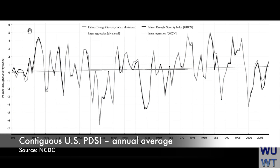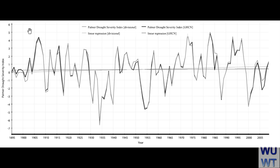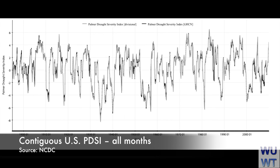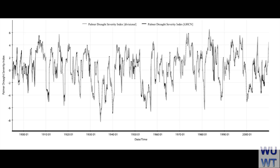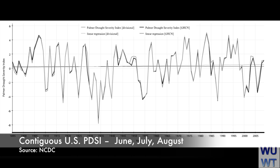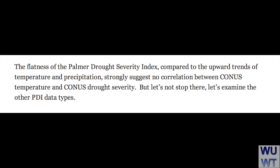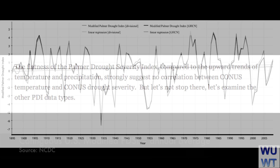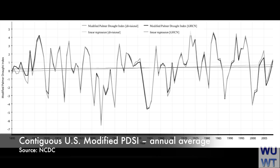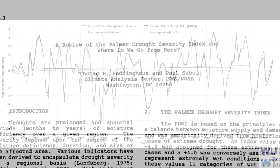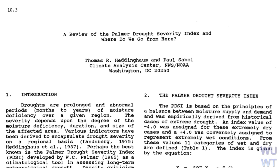Here are the plots. Note that for the Palmer Index, negative values correlate to drier conditions and positive values show wetter conditions. And just in case some people might argue that summer months are most affected, check out this graph. The flatness of the Palmer Drought Severity Index compared to the upward trends of temperature and precipitation strongly suggests there is no correlation between CONUS temperature and CONUS drought severity. Let's examine other PDI data types. Here's the modified Palmer Drought Severity Index, the operational version of the PDSI, which was defined in Heddinghaus and Sabell, 1991.